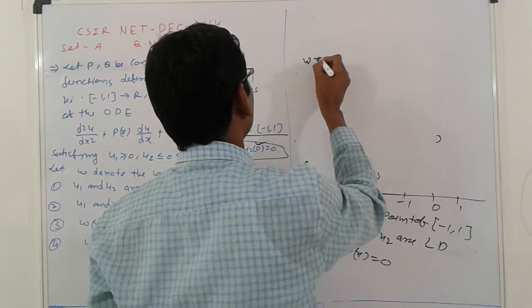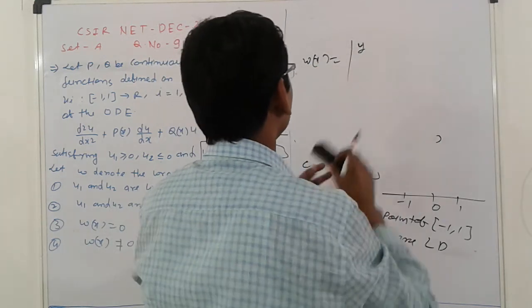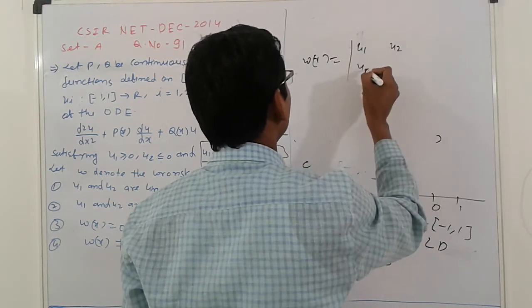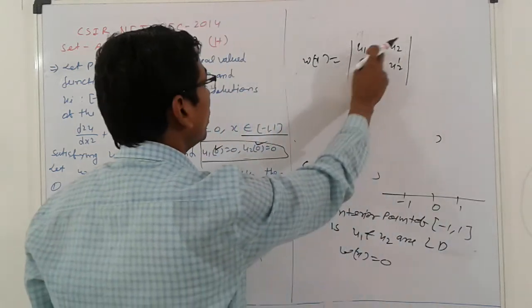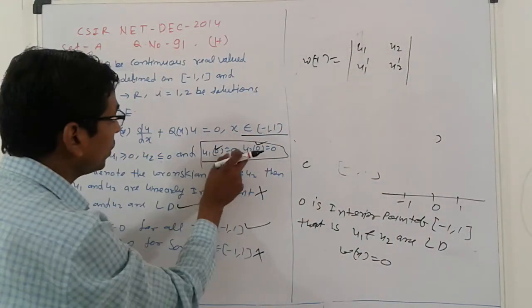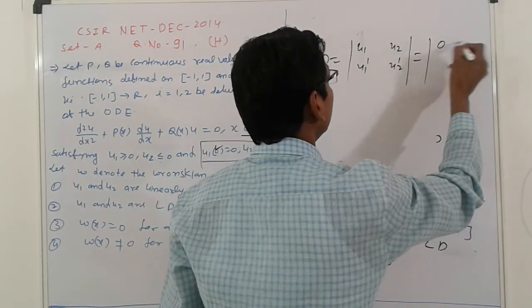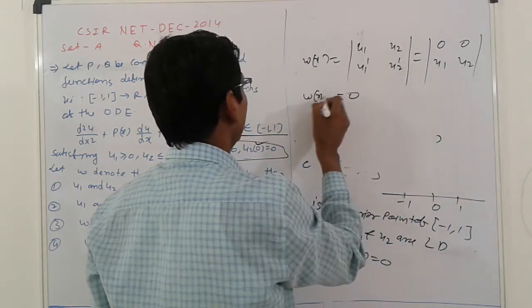Everyone knows that Raskian is equal to here, U1, U1, U2, U1 prime and U2 prime. So, but U1 of 0, okay. I find U1 of 0, U2 of 0. So here everything, this is 0, 0. U1 and U2 of 0. That is 0. Raskian is 0.